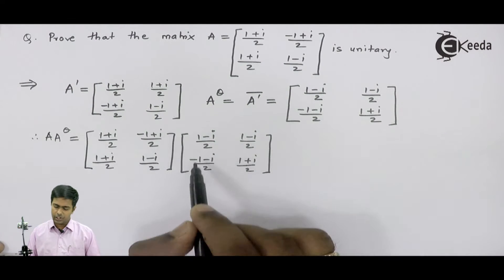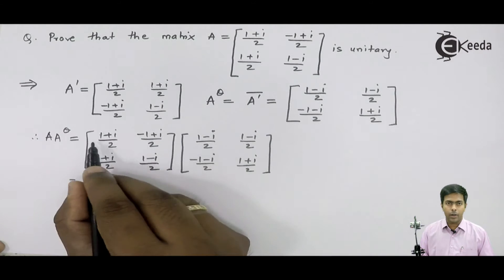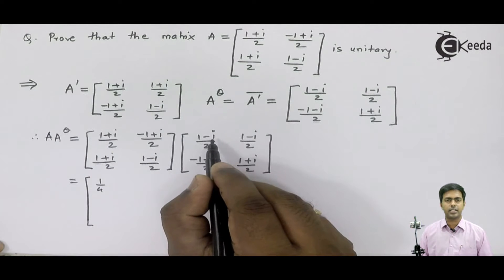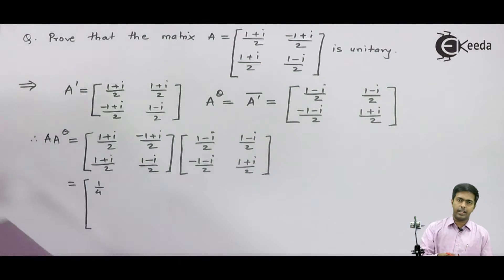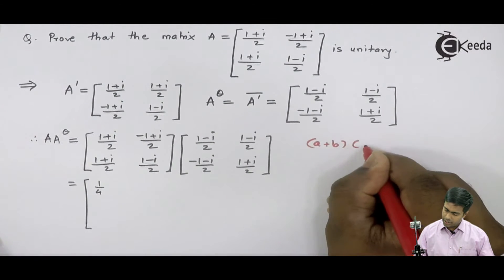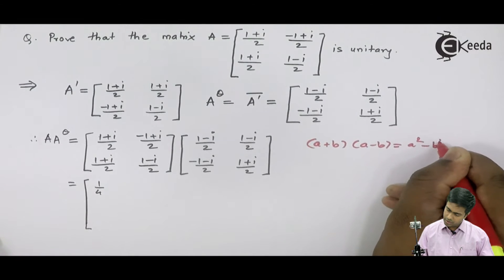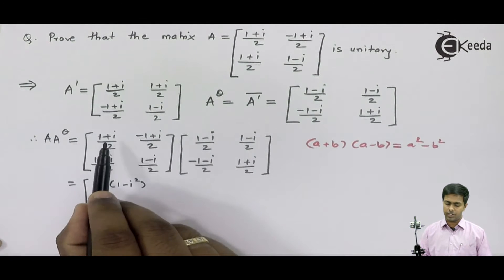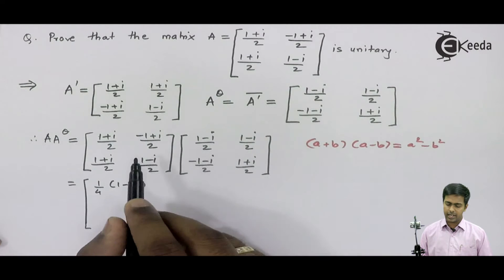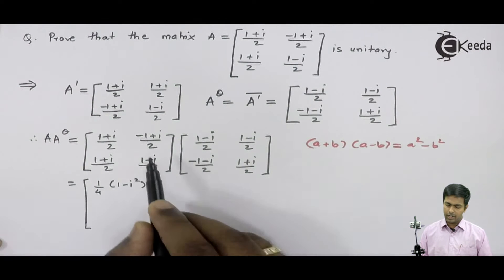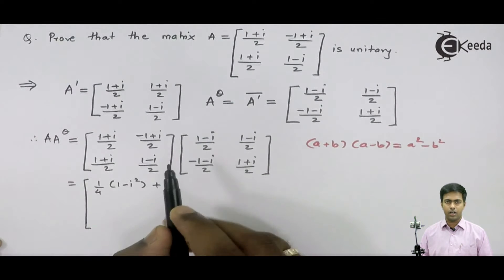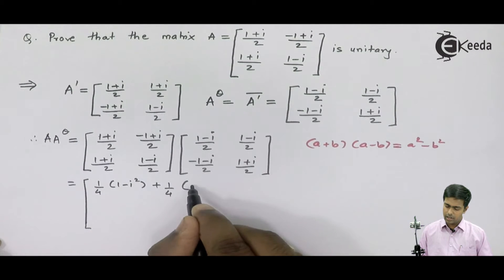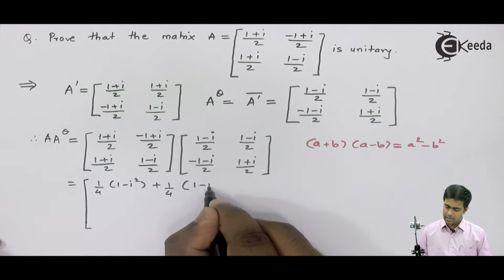I will multiply the first row with the first column. We get (1+i)/2 × (1-i)/2, so 1/2 × 1/2 gives 1/4, and (1+i)(1-i). Applying the algebra formula (a+b)(a-b) = a²-b², we get 1 - i². Next, the second part of this element: (1/2)(1/2) = 1/4, and applying the same formula again we get (-1)(1) and (-i²).